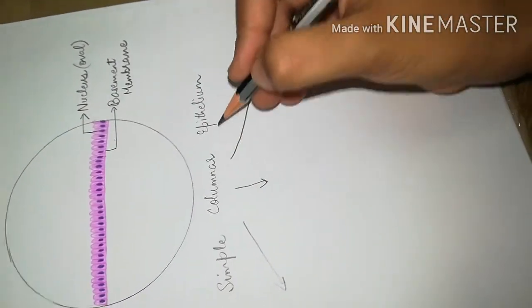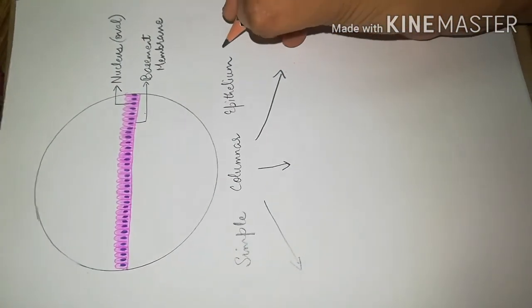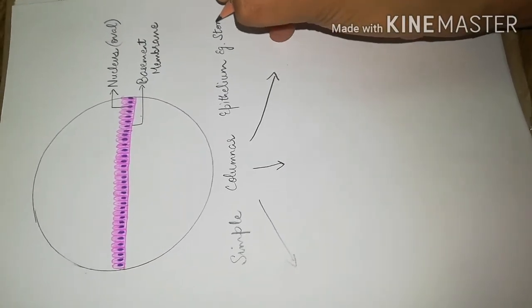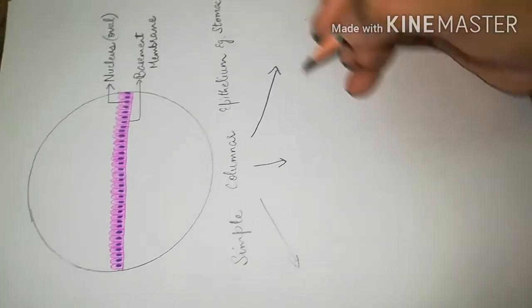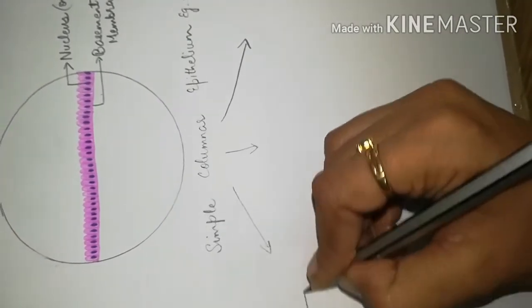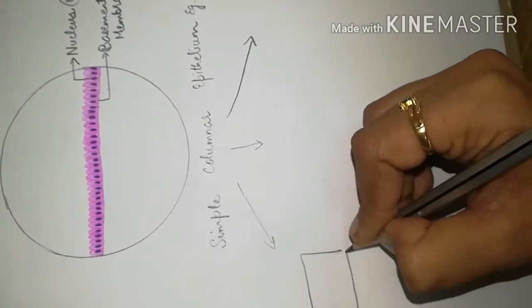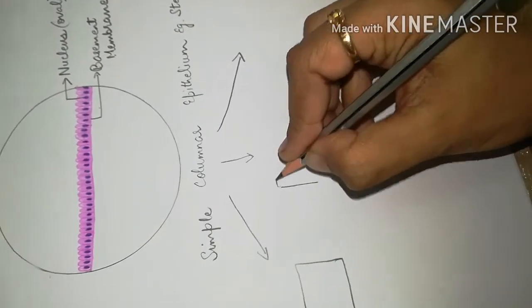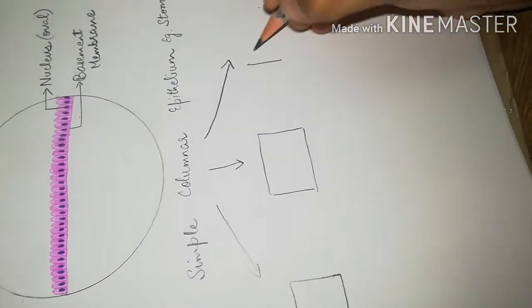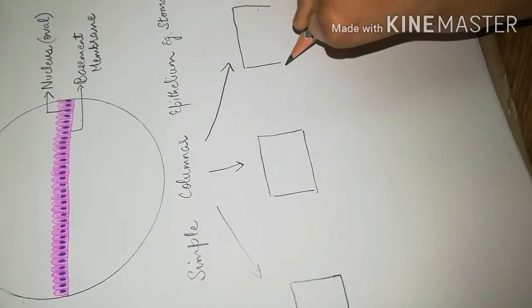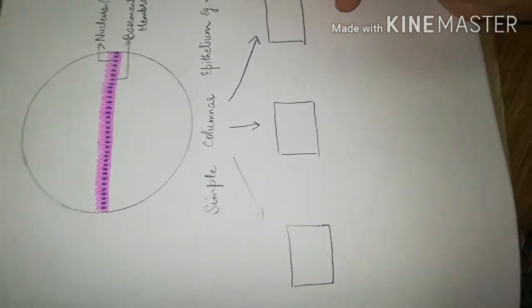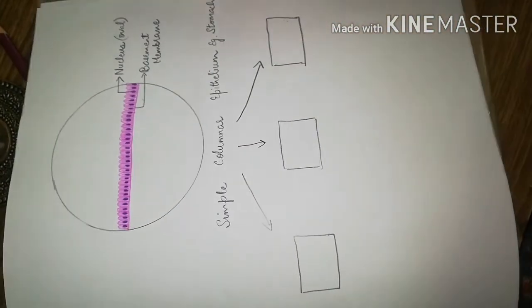Here we will write what we have drawn — that is simple columnar epithelium. Now we have three types of simple columnar epithelium. This plain simple columnar epithelium is present in the stomach, that is without goblet cells, without cilia, and without microvilli.